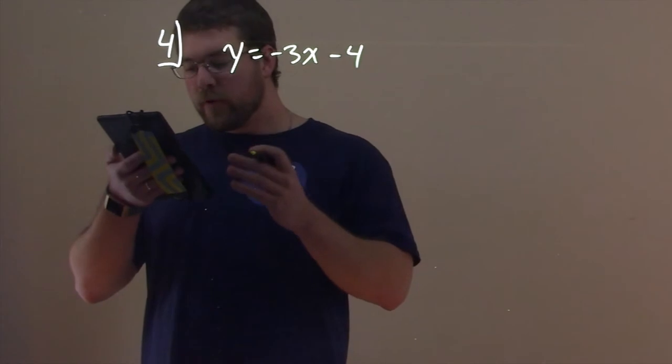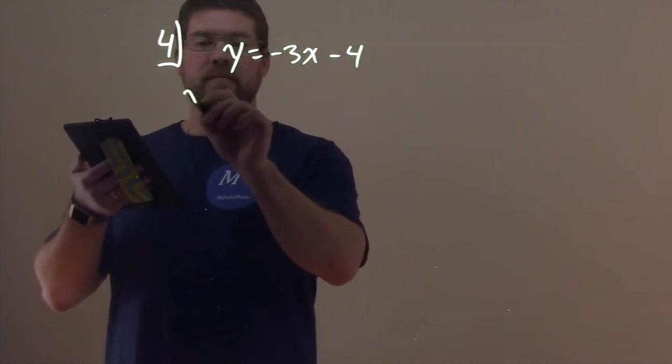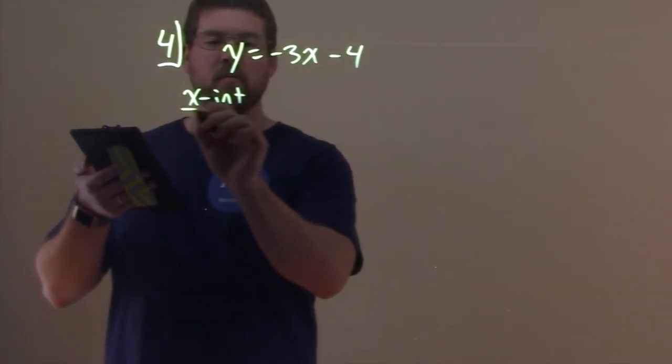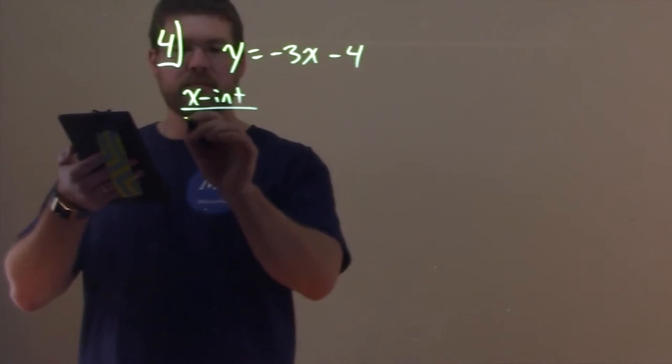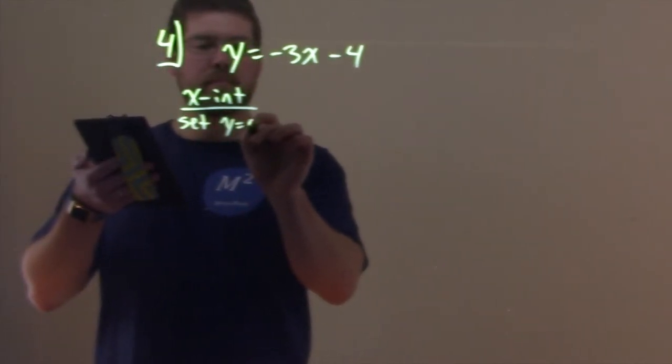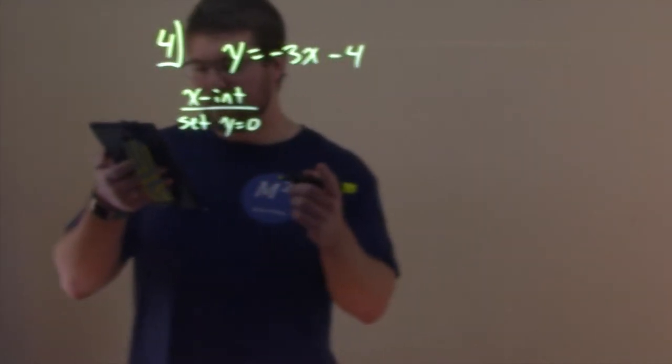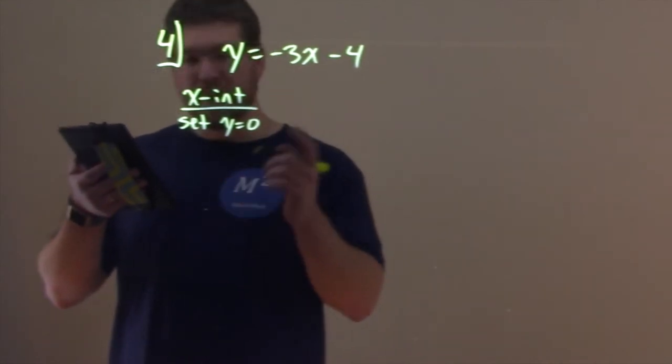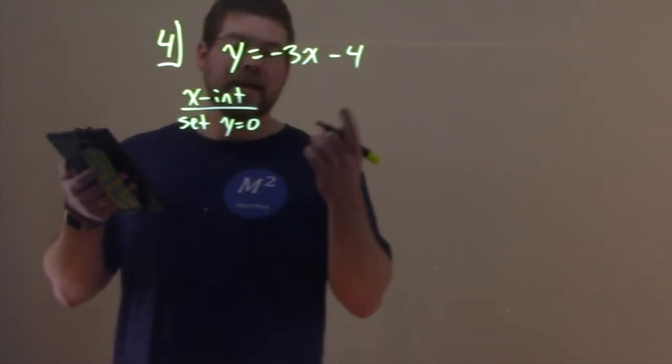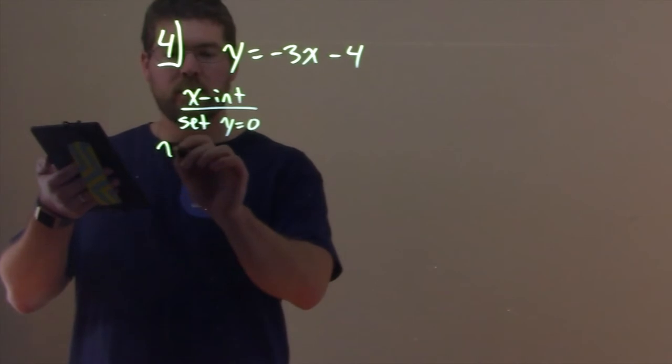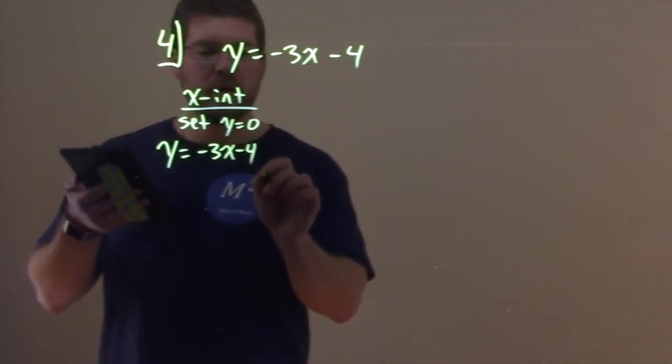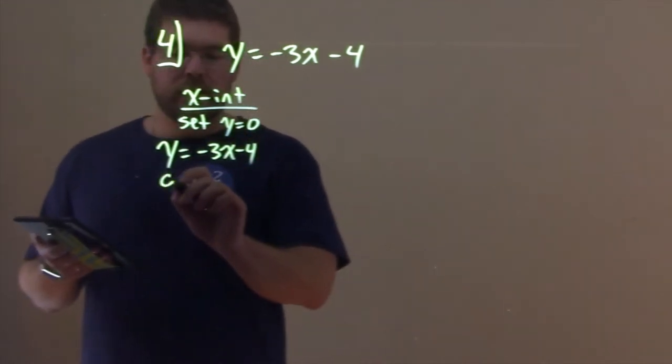So, first thing here, to find the x-intercept, we first want to set y equal to zero. So, we're going to take our equation here and set y equal to zero. So, we have the equation y equals negative 3x minus 4, and y is going to be zero here.